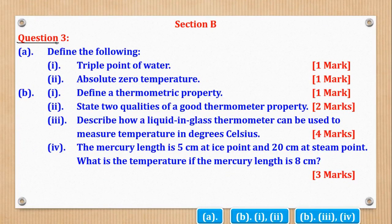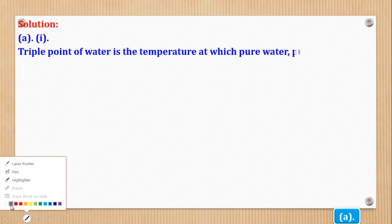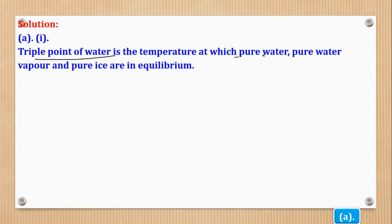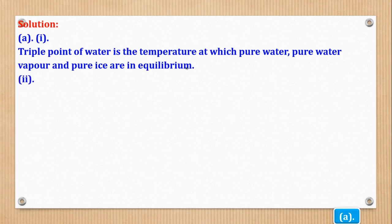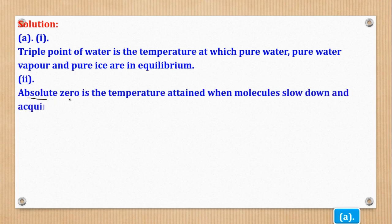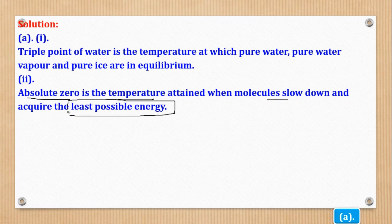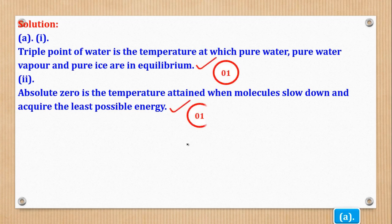Now Question 3, part A: define the following. Roman 1 — triple point of water is the temperature at which pure water, pure water vapor, and pure ice are in equilibrium. Roman 2 — absolute zero is the temperature attained when molecules slow down and acquire the least possible energy.